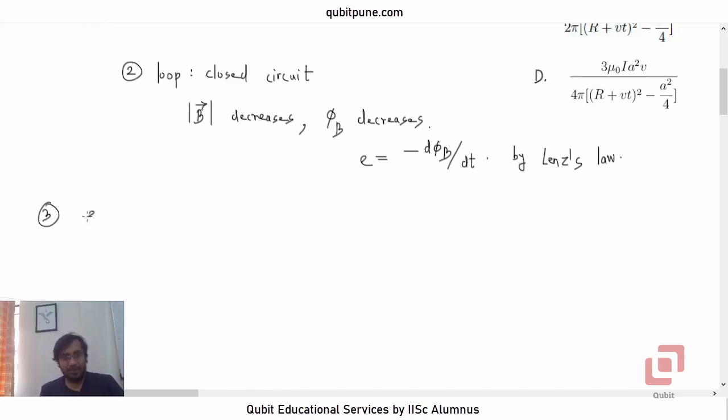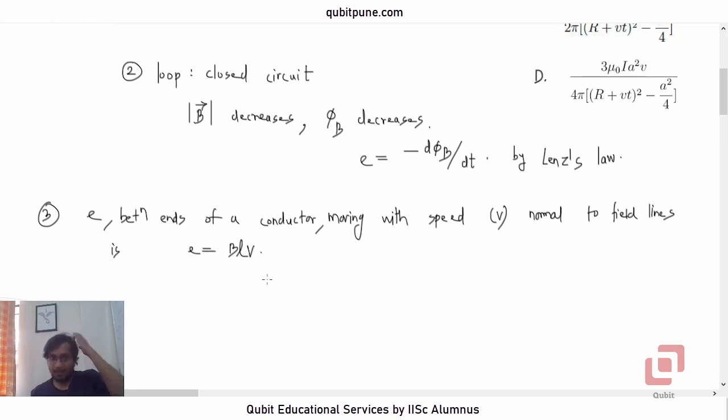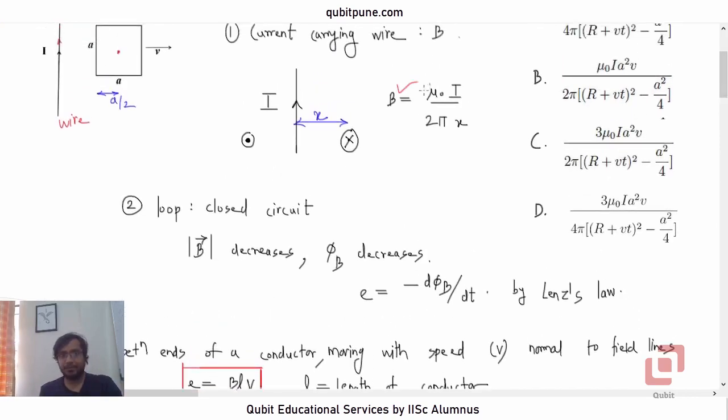So, this induced EMF E, between ends of a conductor moving with speed V, normal to field lines is E equal to BLV, where L is the length of the conductor. So, we are now going to start with the same formula now, E equal to BLV and we wish to now get B from this particular formula.